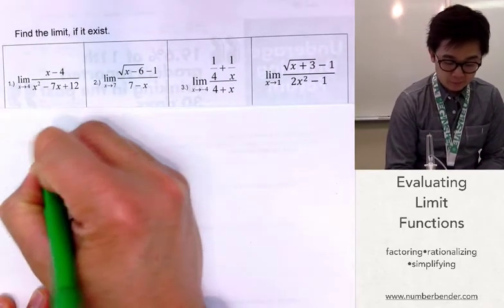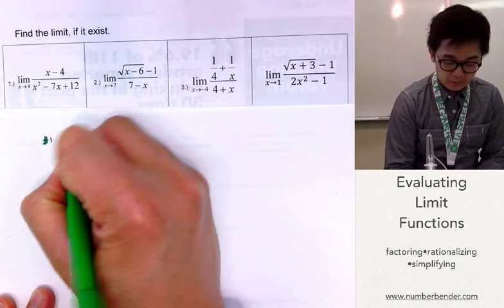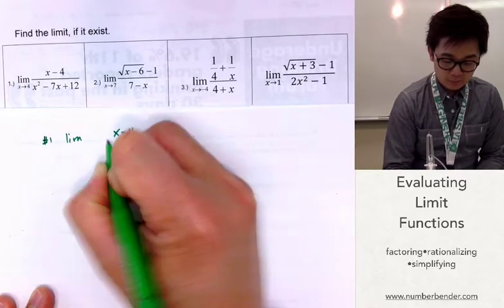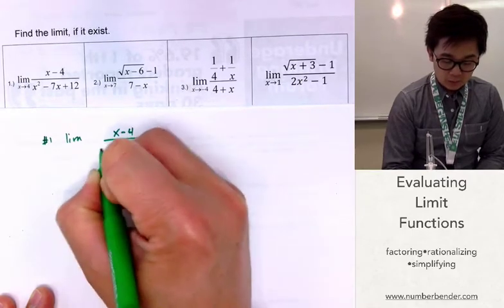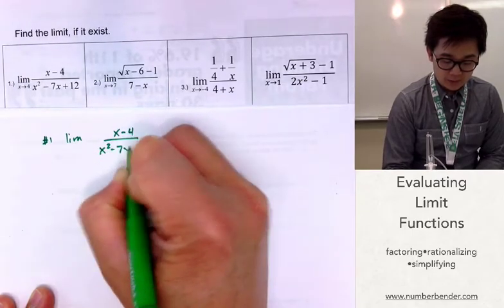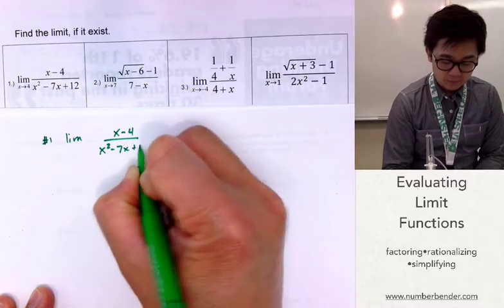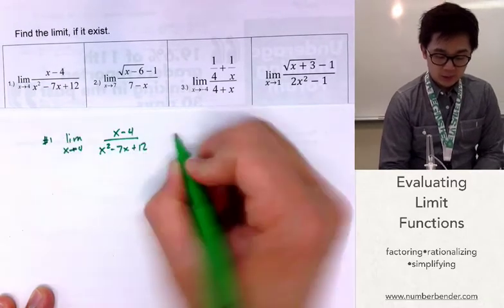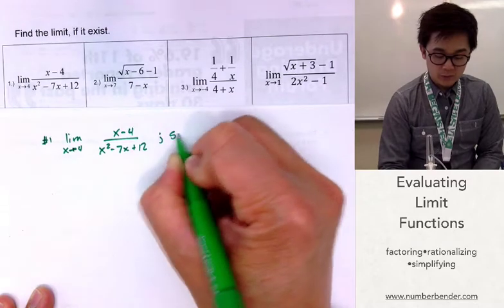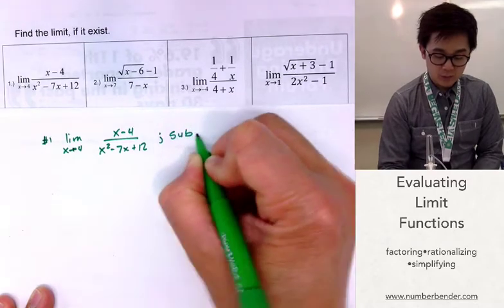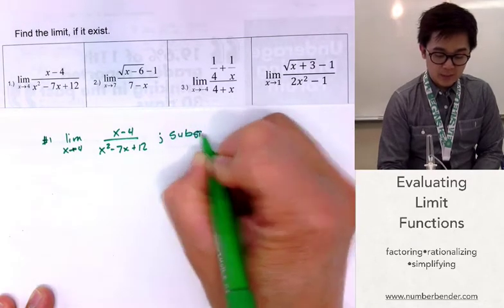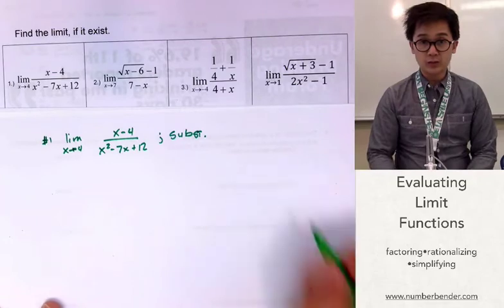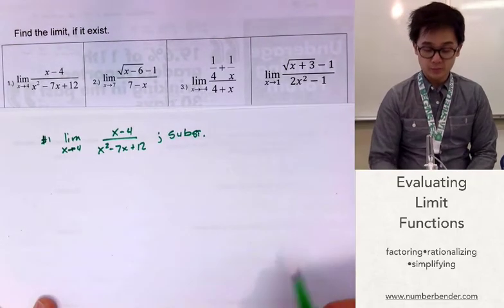We have the limit of x minus 4 all over x squared minus 7x plus 12 as x approaches 4. The first thing you need to do is use the substitution method. I'll check the denominator to see if it's going to be equal to 0.